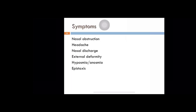Around 80 to 90 percent of people have a deviated nasal septum, but only some have symptoms. The most important symptom is nasal obstruction, followed by headache, nasal discharge, external deformity, hyposmia or anosmia — that is reduced or absent smell sensation — and epistaxis. When there is a sharp spur or deviation, there can be bleeding from the summit of the spur. Recurrent bleeding may need to be dealt with surgically.